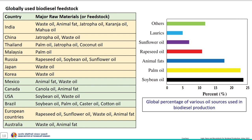This chart indicates the global percentage of various oil sources used in biodiesel production, which includes soybean oil, palm oil, animal fats, rapeseed oil, sunflower oil, lorix and others. The percentage of soybean oil used in biodiesel production is relatively high, followed by palm oil, with lorix being the lowest. This table gives details about the country-specific feedstock for biodiesel production.